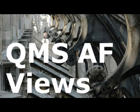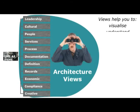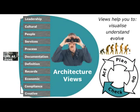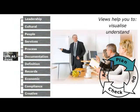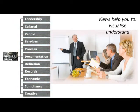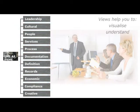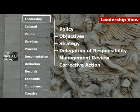The architecture is expressed in terms of views — ways of visualising, understanding and evolving your organisation's approach to quality management. It presents the overall approach and allows your people to identify where they fit in. The leadership view describes how your management oversees the development, deployment and operation of your quality management system.